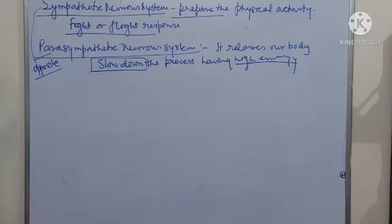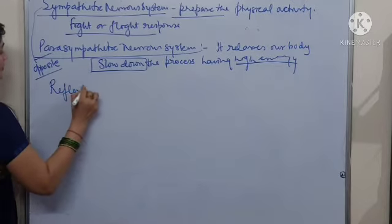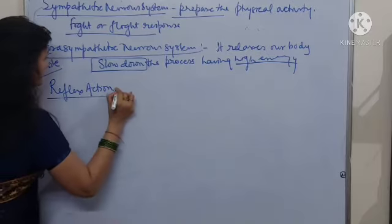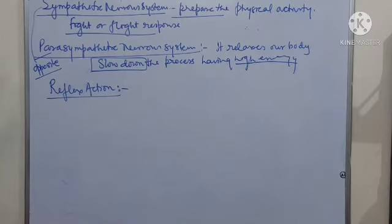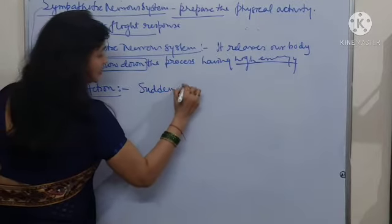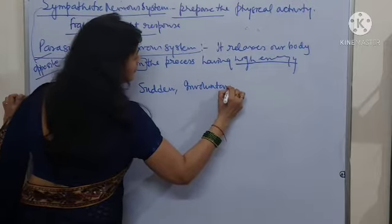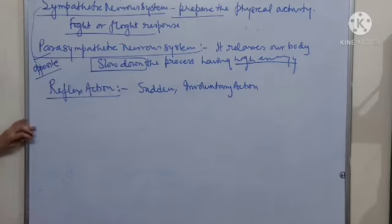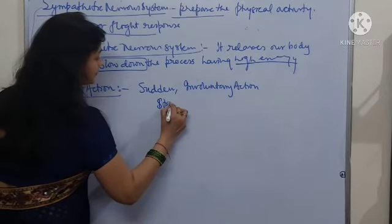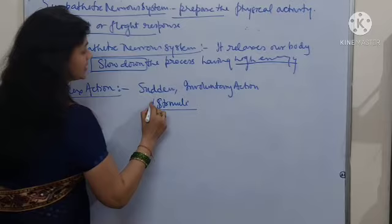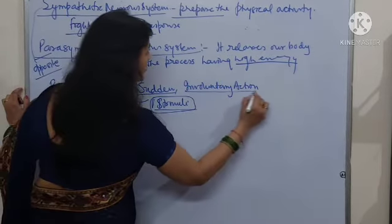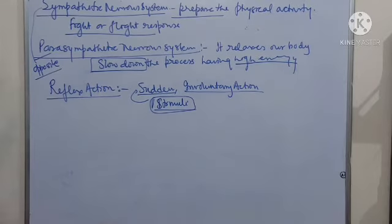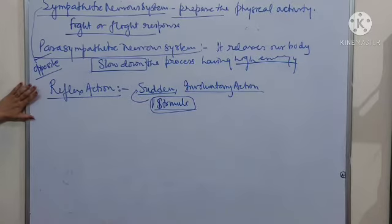That's all about the peripheral nervous system. Now, reflex action — it is a sudden and involuntary action or reaction of the body in response to stimuli. Any sudden and involuntary response that occurs in the body in response to a stimulus is known as reflex action.